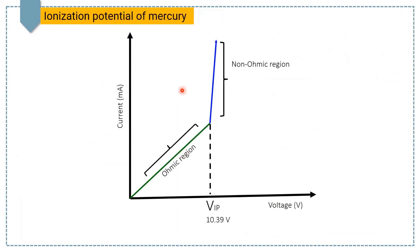Here is the graph in which the x-axis represents potential and the y-axis represents current. In the beginning, the current is low and there is a linear or ohmic behavior between current and voltage. By increasing the potential, a sudden change occurs at a critical voltage, after which we get non-ohmic behavior between the current and the voltage. This non-ohmic behavior happens exactly at the ionization potential. For mercury, the ionization potential is found to be around 10.39 volts.